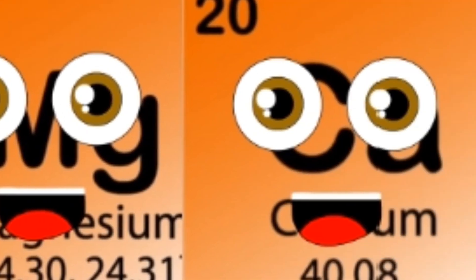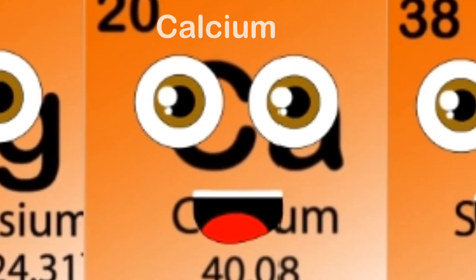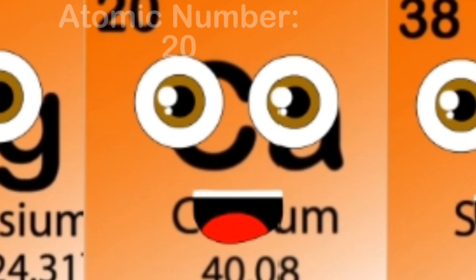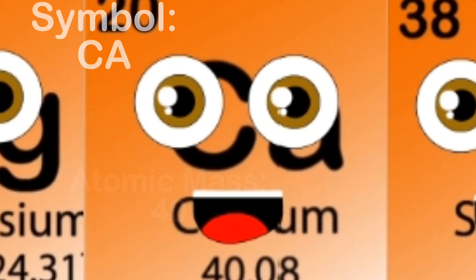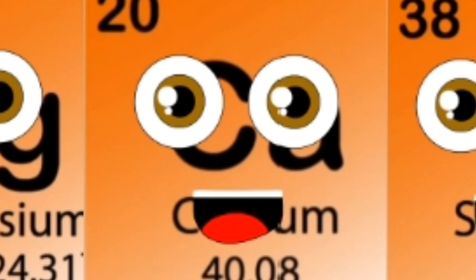Hello, I am Calcium. I am found in bones and teeth. My atomic number is 20, atomic mass is 40. Ca is my symbol on my periodic square. I also have 20 electrons, in case you do care.